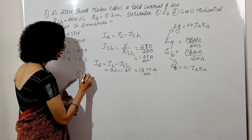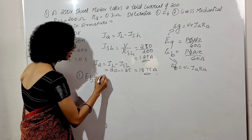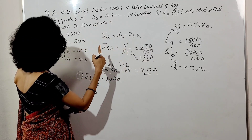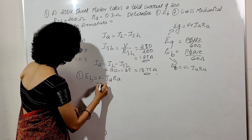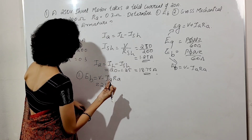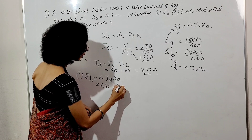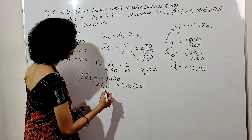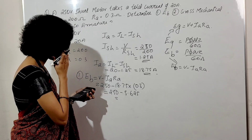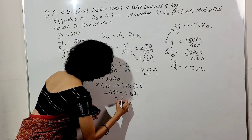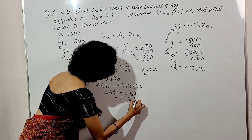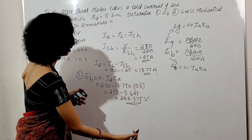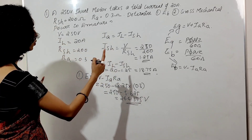The back EMF EB is equal to V minus IA*RA. So EB equals 250 minus 18.75 into 0.3, which is equal to 244.375 volts. That is the back EMF.